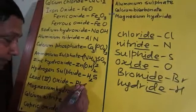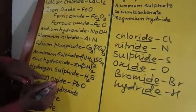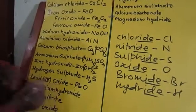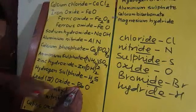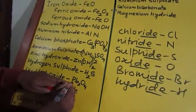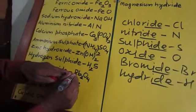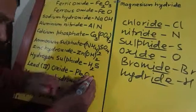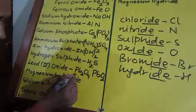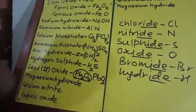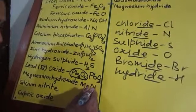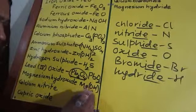Lead(IV) oxide: lead has valency 4 ('ic' means maximum valency), oxygen has valency 2. Exchanging gives Pb₂O₄, but since two atoms of lead combine with four atoms of oxygen, one atom of lead combines with two atoms of oxygen — so the common factor is taken and we simplify to PbO₂.